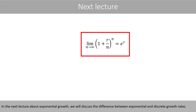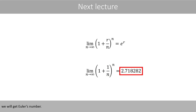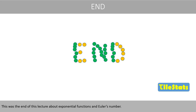In the next lecture about exponential growth we will discuss the difference between exponential and discrete growth rates. In that lecture we will see that if we set R to 1 and N to a super large number, we will get Euler's number. This was the lecture about exponential functions and Euler's number. Thanks for watching!